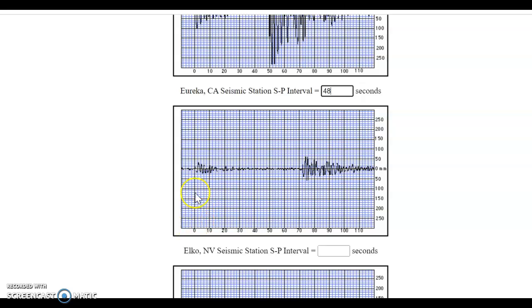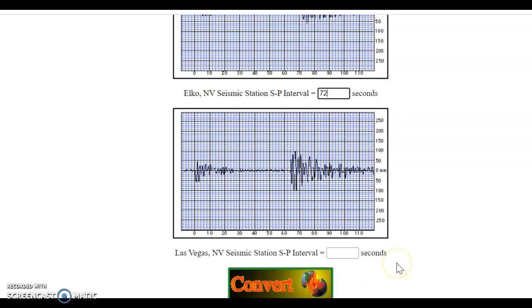And at Elko, Nevada, first P wave, first S wave. So it looks like that is, it's kind of hard to see. You might want to zoom in a little bit, but if you're within a second or two, maybe three, it's going to come out pretty good for you. So I'm going to say 72, 73 might be a good guess also.